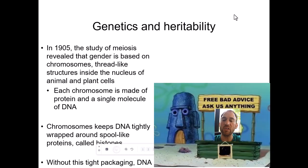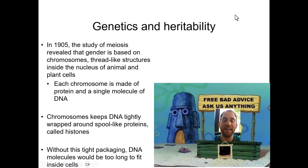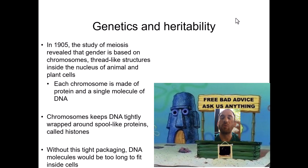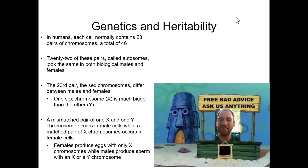In 1905, the study of meiosis revealed that genes are based on chromosomes — thread-like structures inside the nucleus of animal and plant cells. Each chromosome is made of protein and a single molecule of DNA. Chromosomes keep DNA tightly wrapped around spool-like proteins called histones; without this packaging, DNA would be too long to fit inside cells. This solidified in the early 20th century the application of genetic understanding to other aspects, such as biological sex.